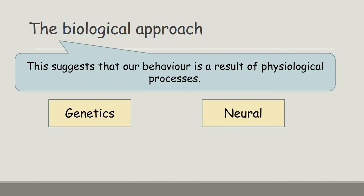In terms of the biological approach, this suggests that our behaviour is a result of our physiological processes — that is the key assumption of the biological approach. Behaviours can be explained through physiological processes within our biological make-up. We're going to look specifically at genetics and neural aspects, and we need to be familiar with research that backs this up. The detail in your booklets covers the research, which can always add to a six-mark descriptive answer. I'm going to focus mainly on the actual processes in this video.